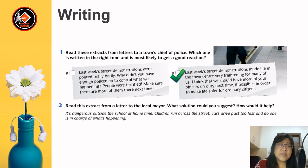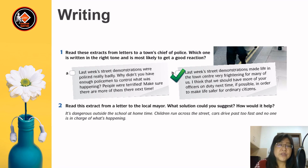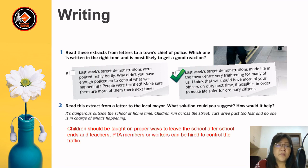Task 2: Read this extract from a letter to the local mayor. What solution can you suggest and how would it help? The problem is: 'It's dangerous outside the school at home time. Children run across the street, cars drive past too fast, and no one is in charge of what's happening.' You can write: children should be taught proper ways to leave school, and PTA members or workers can be hired to control the traffic.